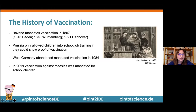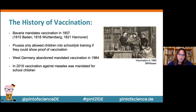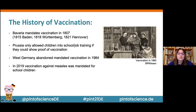This idea of vaccination was so successful that some countries even mandated it. Bavaria was the first place in the world to mandate vaccination in 1807; other places in Germany followed. Parents who wouldn't vaccinate their children were fined. Prussia didn't fine people but only allowed children into school or job training if they could show proof of vaccination — which may remind some people of current regulations around measles vaccination. West Germany abandoned all mandated vaccinations in 1984, but in 2019 the measles vaccination rule was reintroduced.